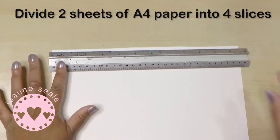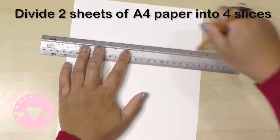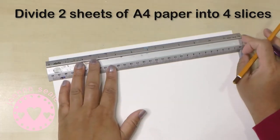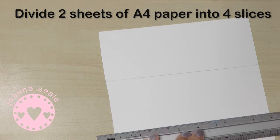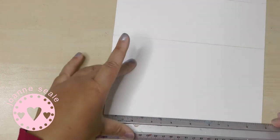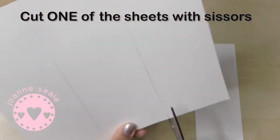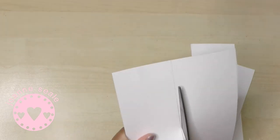First of all you need to get two sheets of A4 paper. I'm using watercolor paper but you can use any paper to start off with. You may find that if the paper is thin like printer paper then the pages might start curling a bit. So I've divided each sheet into four sections using a ruler and now I'm cutting them out with scissors.